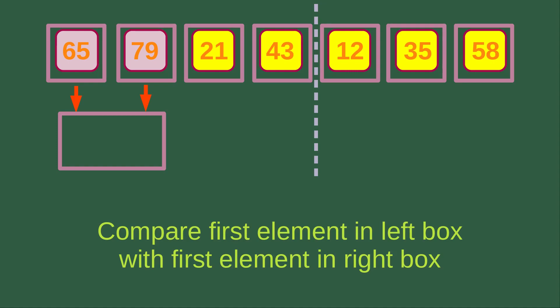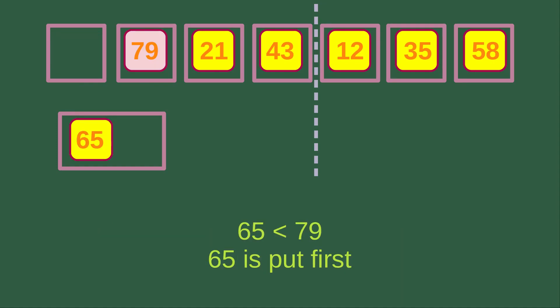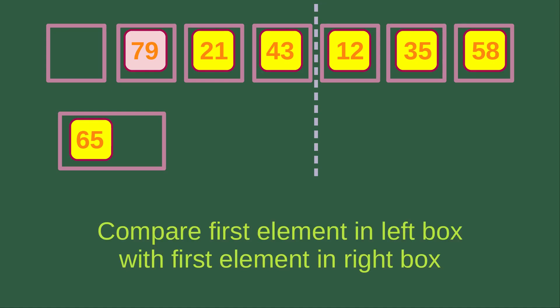65 is on the left-hand side, and 79 is on the right-hand side. Since 65 is smaller than 79, 65 is put into the merging box first. And then we are going to compare the first element in the left box with the first element in the right box.